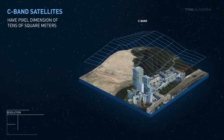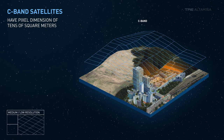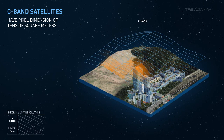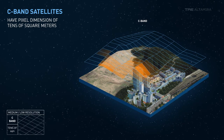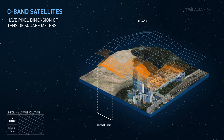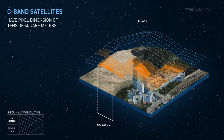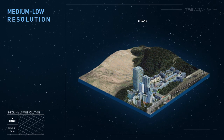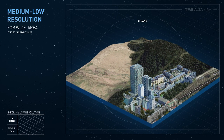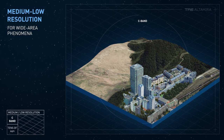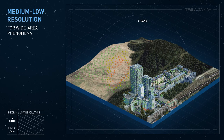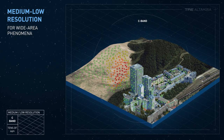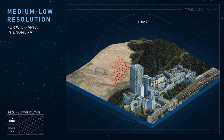C-band satellites usually acquire imagery with a pixel size in the range of tens of square meters. Because of their sensitivity and resolution modes, C-band sensors are usually suited to monitor phenomena over wide areas.